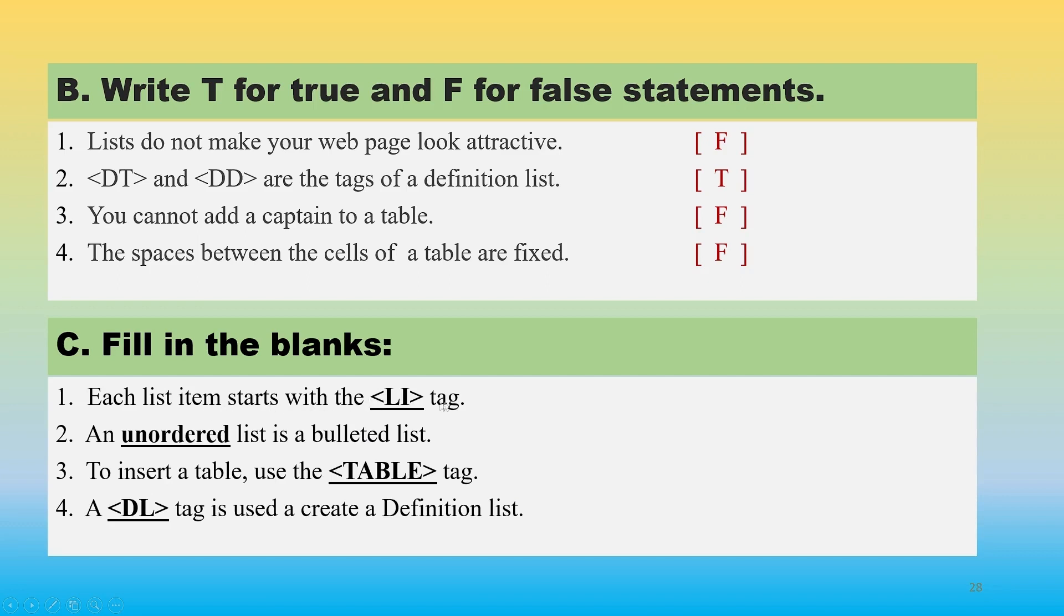Next question is fill in the blanks. Each list item starts with LI tag. An unordered list is a bulleted list. To insert a table we use TABLE tag. A DL tag is used to create a definition list. So here we write DL.